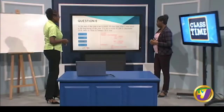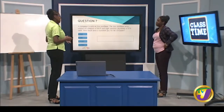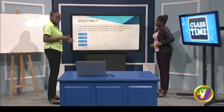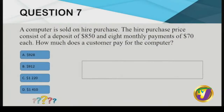Question seven: a computer is sold on hire purchase. The hire purchase price consists of a deposit of $850 and eight monthly payments of $70 each. How much does the customer pay? Hire purchase is a payment option for when you don't have all the cash — you make a deposit and equal monthly installments, but you end up paying more than the cash price.